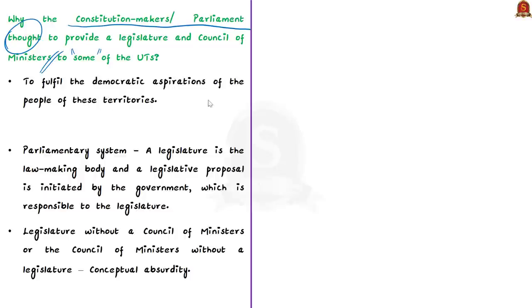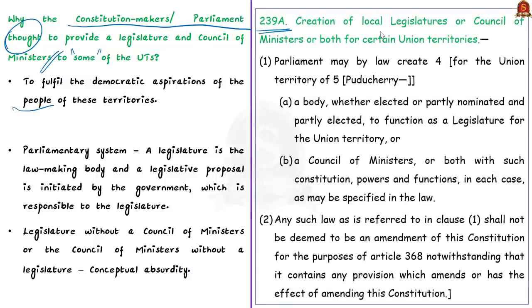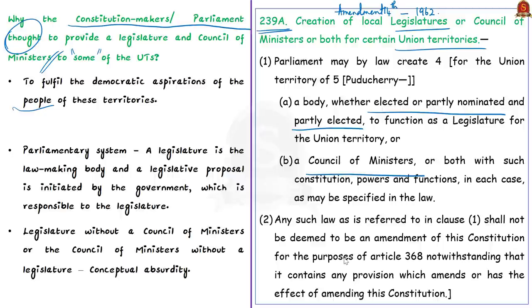The reason is to fulfil the democratic aspirations of the people of these union territories. Article 239A was brought in through the 14th Constitutional Amendment in 1962, enabling parliament to create legislatures for union territories. Accordingly, the union government enacted the Government of Union Territory Act of 1963. As per Article 239A, a legislature is a body that is elected or partly elected and partly nominated. There can be a council of ministers without a legislature, or both a legislature and a council of ministers.